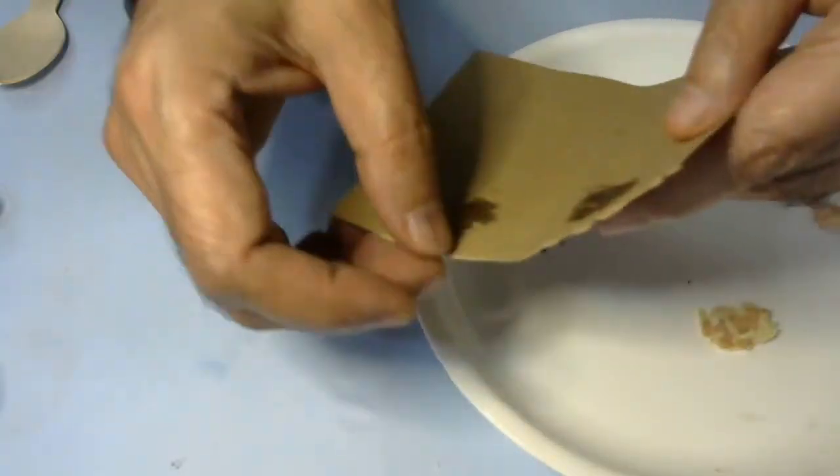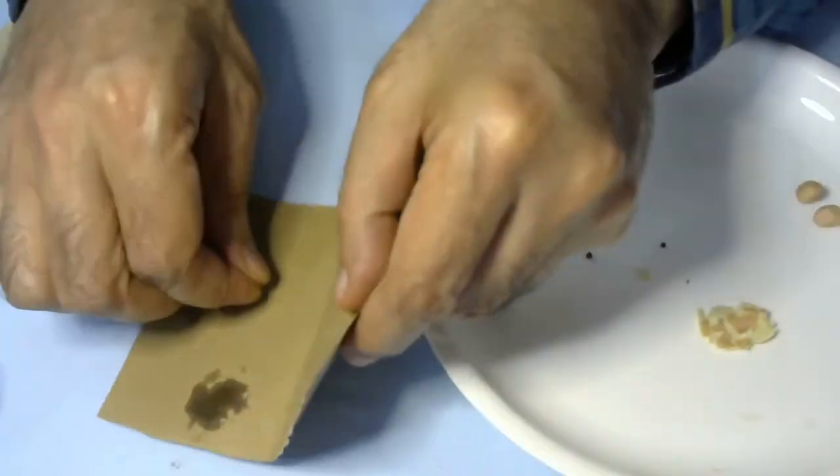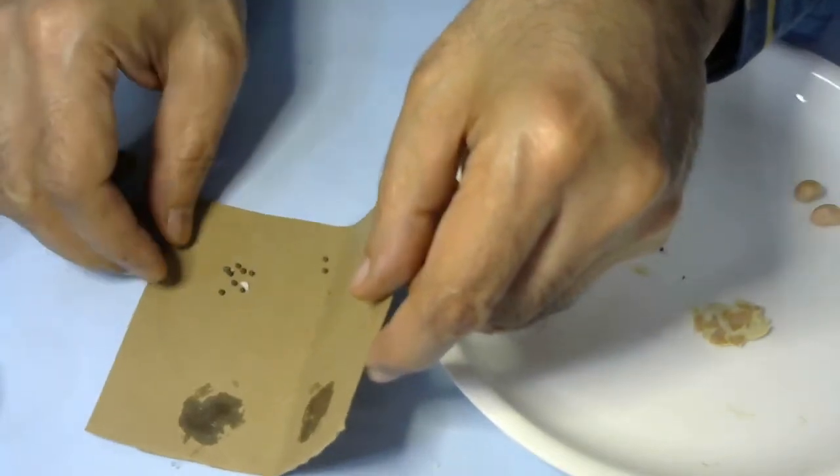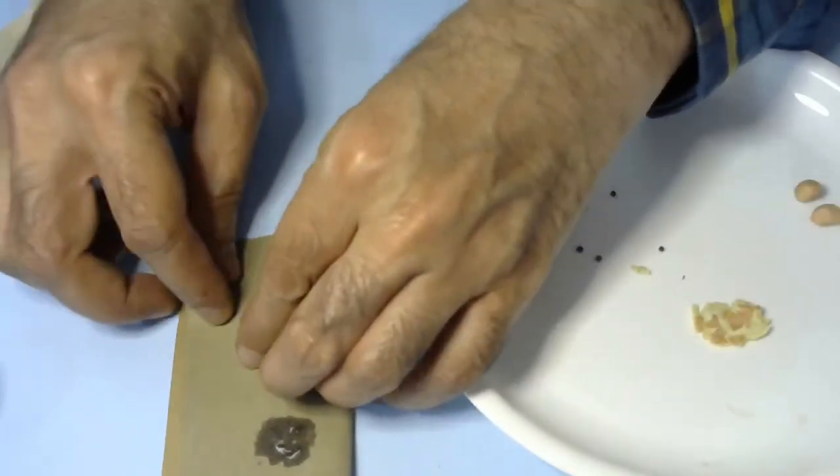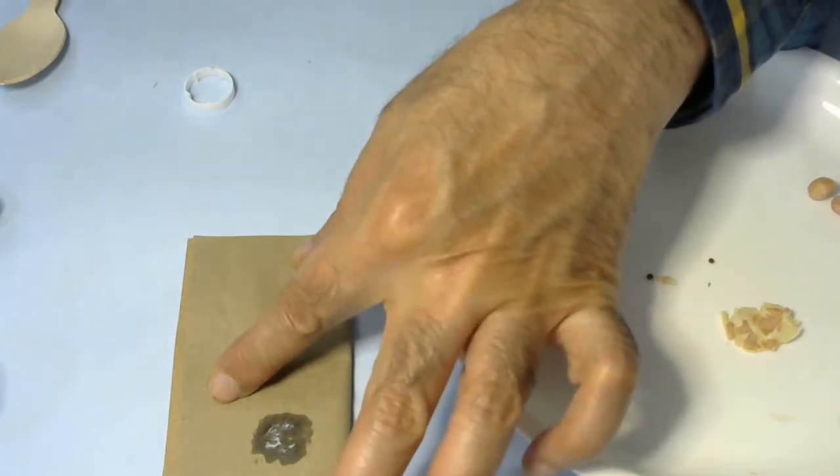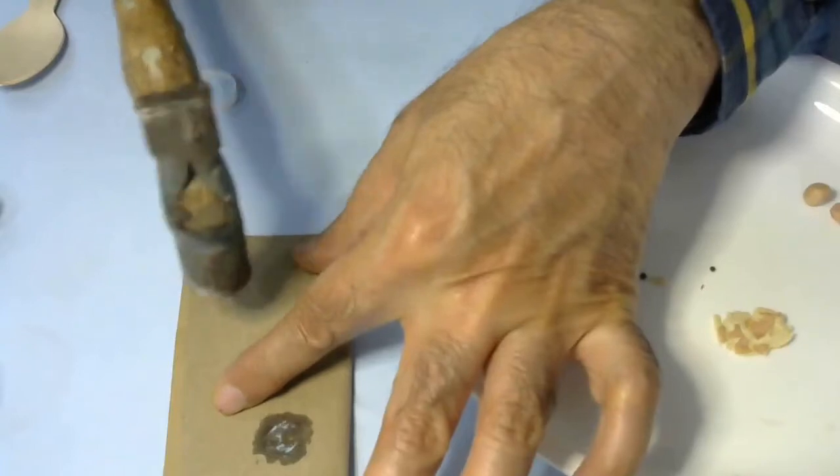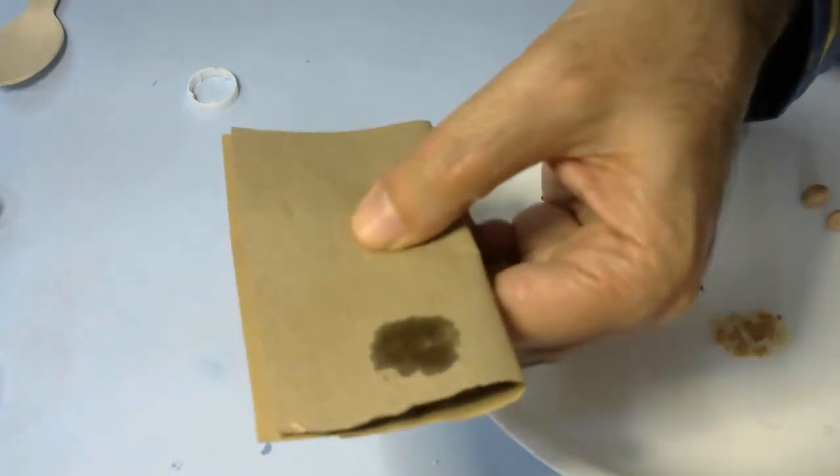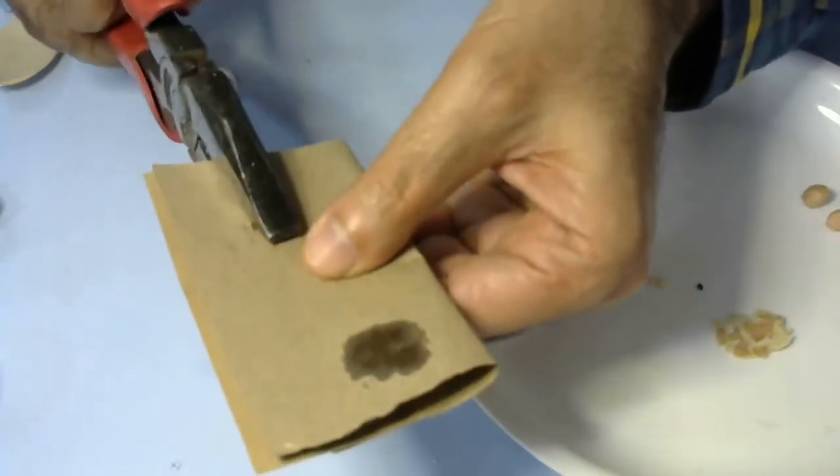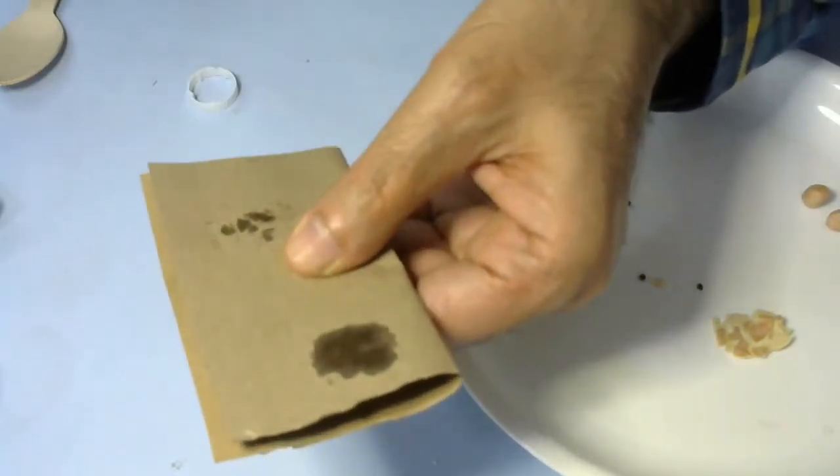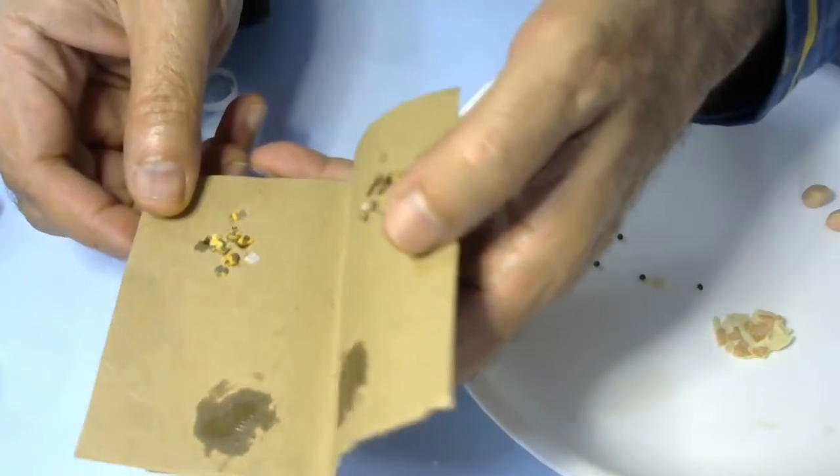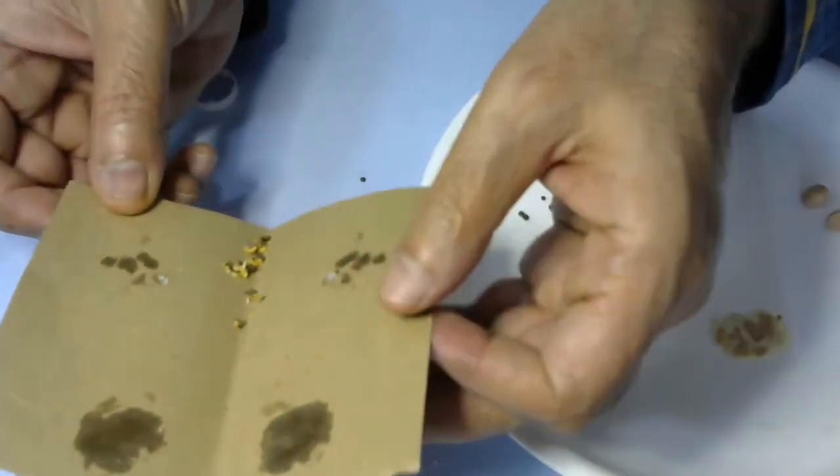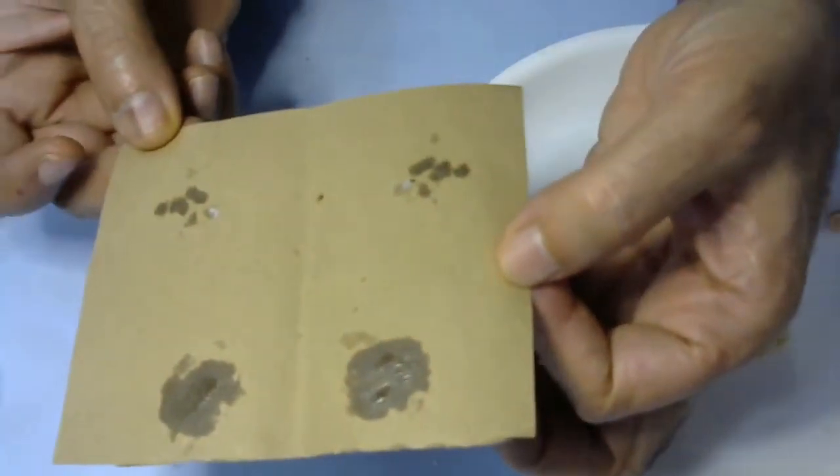We can do the similar test on mustard seeds. As you know, we extract mustard oil or sarson ka tel from these seeds. Again, I'll do the same experiment. Using a hammer, I'll crush them. To crush them even harder, I'll use pliers so I can apply harder force and crush them like this. Immediately, the oil or fat from mustard seeds comes out, which stains the paper and the paper becomes translucent. This is the simple test to see if food contains any fat.